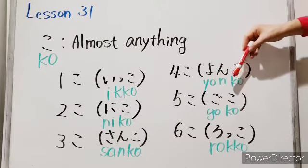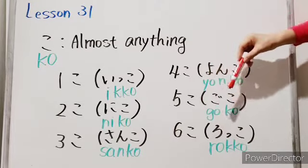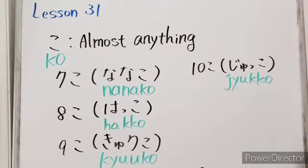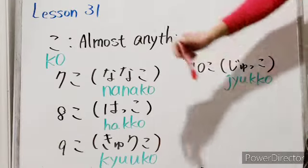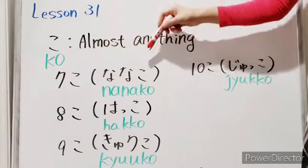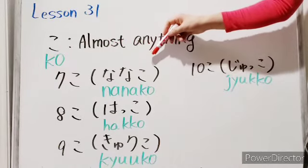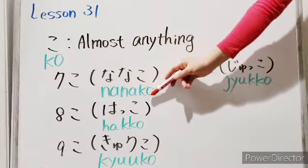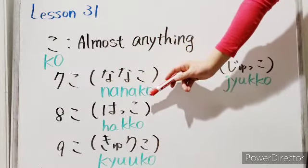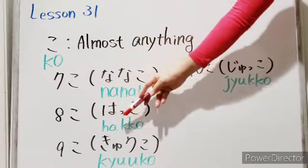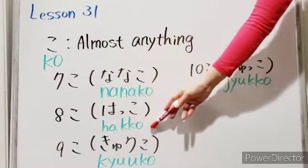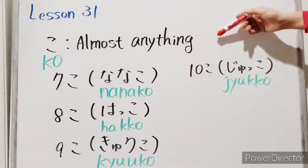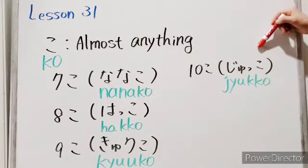Six — rokko. Seven — nanako. Eight — hachiko. Nine — kyuuko. Ten — jukko.